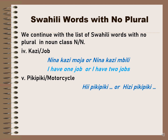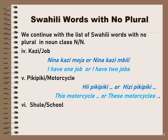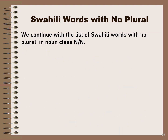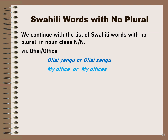For 'pikipiki' meaning motorcycle: 'hii pikipiki' means this motorcycle and 'hizi pikipiki' means these motorcycles. For 'shule' meaning school: the word 'shule' is used mainly in Tanzania mainland, while in Zanzibar the English word 'school' is commonly used. 'Shule iko mbali' means the school is far; 'shule ziko mbali' means schools are far. For 'ofisi' meaning office: 'ofisi yangu' is my office and 'ofisi zangu' is my offices.